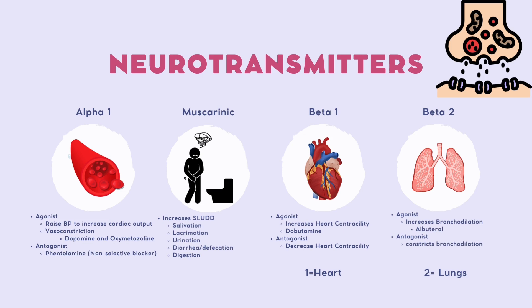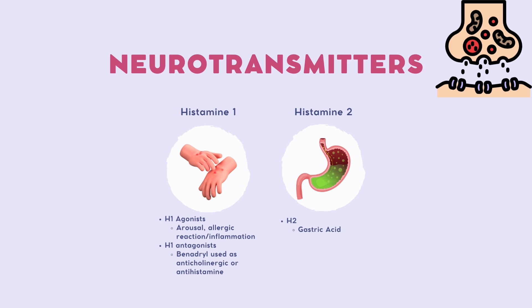We can remember beta-1 and beta-2 this way: beta-1 acts on the heart — you only have one heart, so beta-1 equals the heart. Beta-2 acts on the lungs — you have two lungs, so beta-2 should remind you of the lungs.